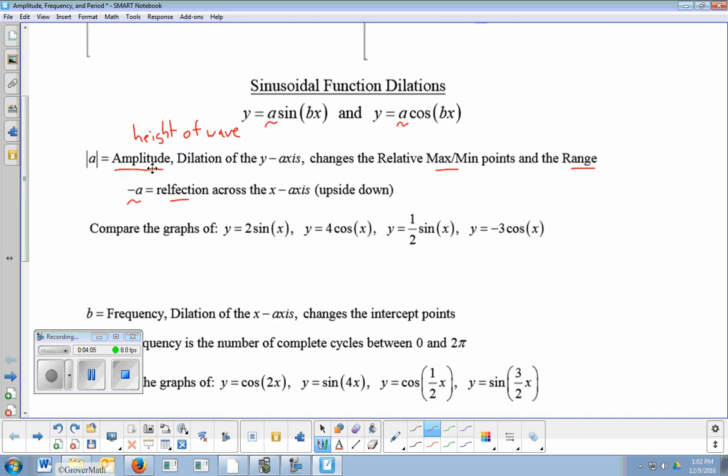Now, that doesn't change the amplitude, though. That's why we say absolute value of a is amplitude. Like if I have, in this case, my y equals negative 3 cos x, it's going to be upside down because of the negative, but my amplitude would still be positive 3 because the height is still 3. Even if I start down here, it's still going to go up to 3 at some point because the wave just keeps going. So amplitude is always positive. Remember that.